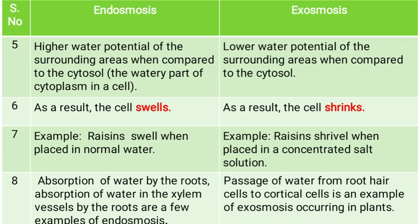Sixth point: in endosmosis, the cell size swells, and in exosmosis, the cell size shrinks. An example of endosmosis is raisins — they swell when placed in normal water.